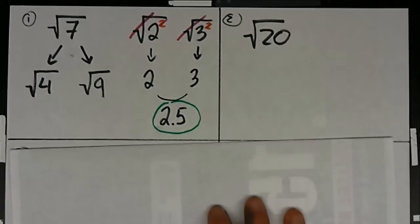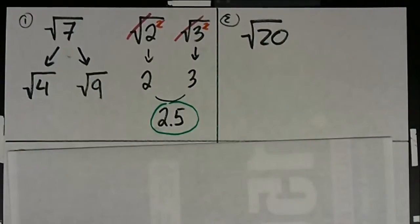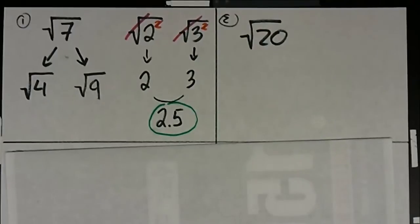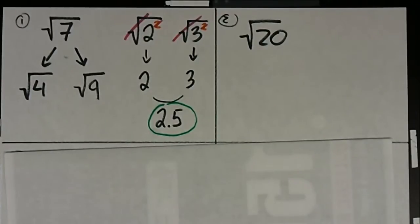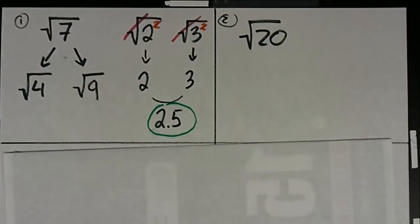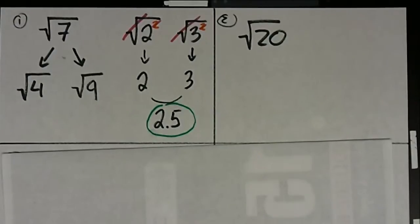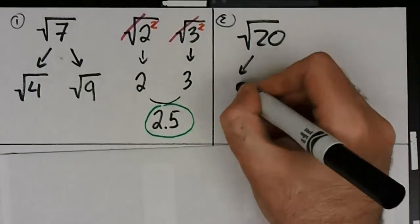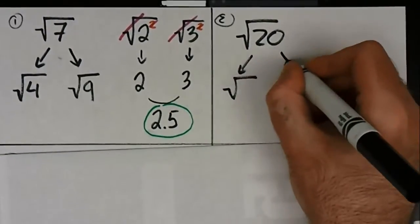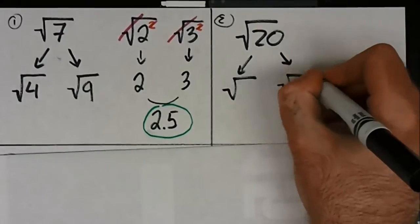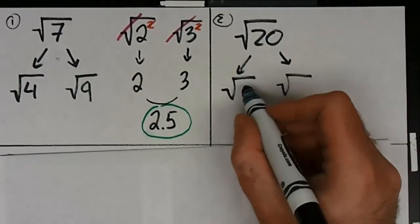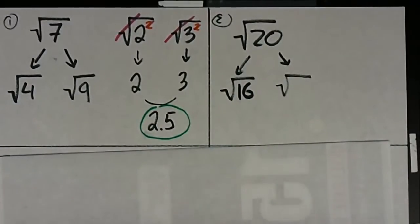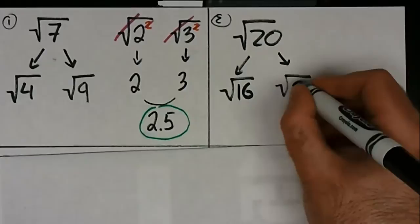Let's take a look at number 2. Number 2 is pretty similar to number 1. Again, is 20 a perfect square? It is not. So what are the two perfect squares closest to 20 — one below, one above? The one right below 20 is 16, and the closest perfect square right above it is 25.